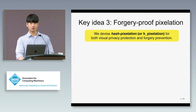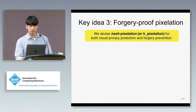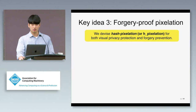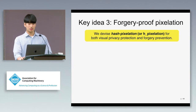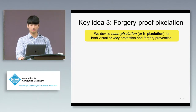The third idea is to use pixelation for both visual privacy protection and forgery prevention. To do this, we devise hash pixelation, or HPixelation, and use it in place of conventional pixelation.